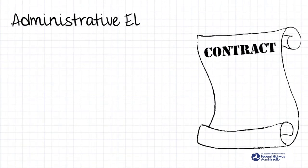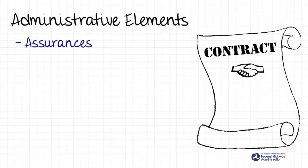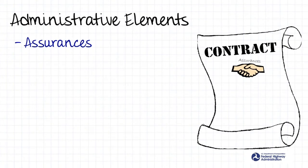Let's talk about the pre-award phase first. In the pre-award phase of a federal aid contract, you are expected to address administrative elements of the contract. For every contract, you must include the following clauses. Assurances: the required DBE assurances are found in the Federal DBE regulations. These assurances are contract provisions that hold the prime contractor, the subcontractors, and you, the LPA, accountable to your state's approved DBE program guidelines.